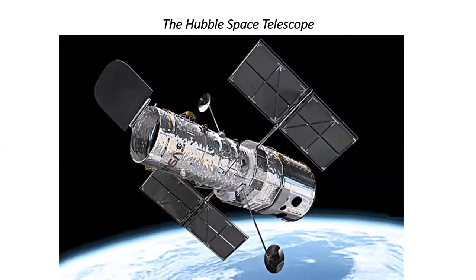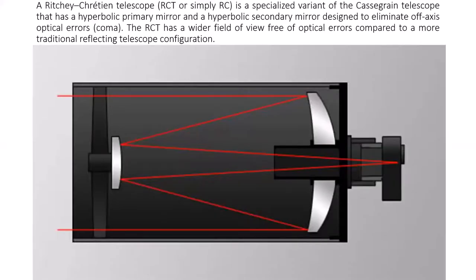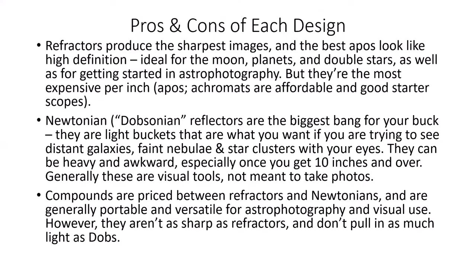The Hubble Space Telescope is a type of compound telescope: a Ritchey-Chrétien design, invented by American George Ritchey and French astronomer Henri Chrétien. Both the primary and secondary mirrors have hyperbolic curves, which eliminate off-axis coma. This gives it a wider field of view without optical errors. Most of the world's large telescopes today, like the Subaru Telescope in Hawaii, use this Ritchey-Chrétien design.